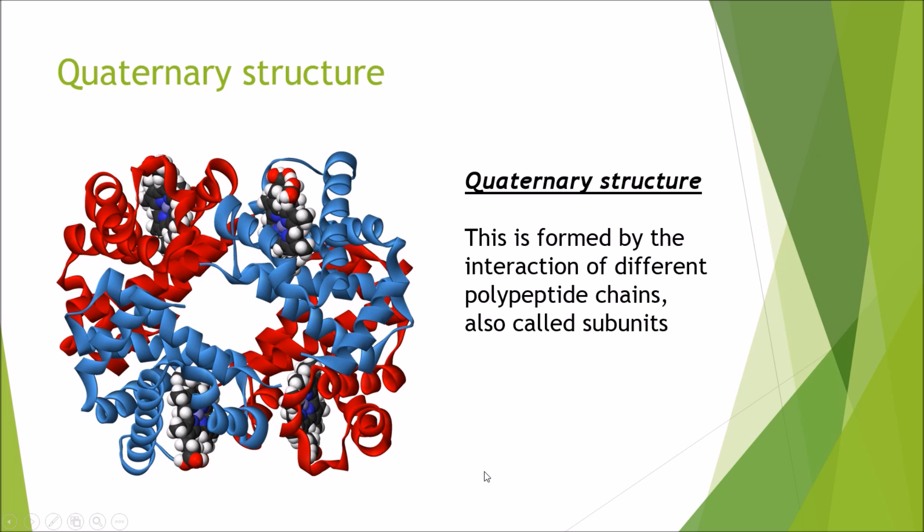After tertiary you then get quaternary. The quaternary structure is formed by the interaction of different polypeptide chains which are also called subunits. Each of these colored chains here represents a different polypeptide chain. These two blue ones are the same and these two red ones are the same. This here is a diagram of hemoglobin consisting of two alphas and two betas. These groups here are known as prosthetic groups. They're inorganic molecules which have been attached which will give the protein a different function. In this case we've got heme.